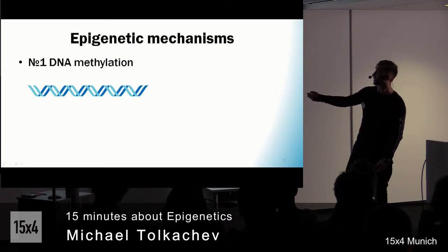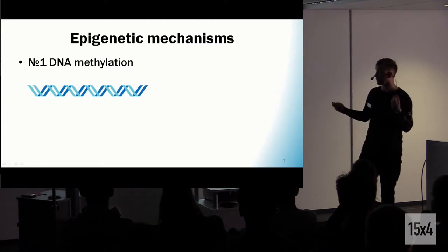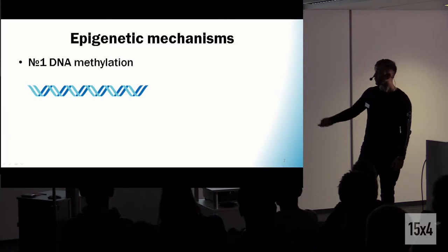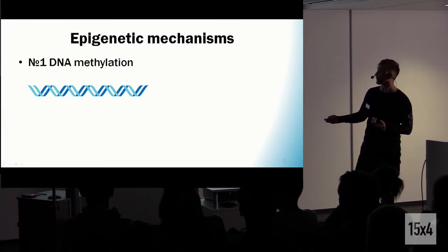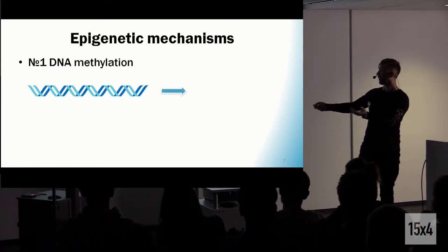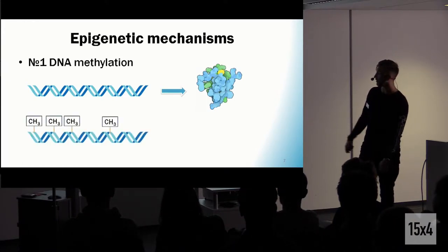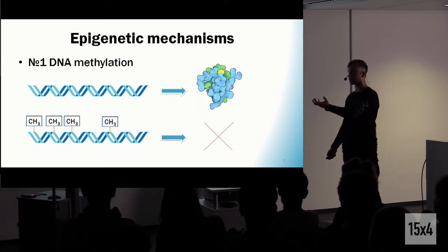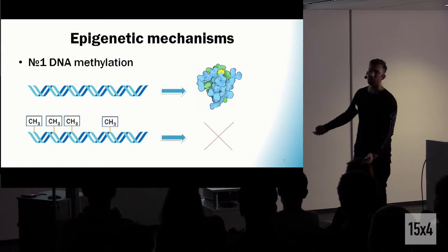What are the epigenetic mechanisms? The first major mechanism is DNA methylation. It's a bit complex from a scientific point of view — there is one particular nitrogen base that can be modified. Un-methylated DNA will produce a product. Methylated DNA can be read, but transcription factors — the machinery proteins responsible for reading this part — cannot access it; they bump off this strand.